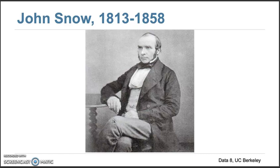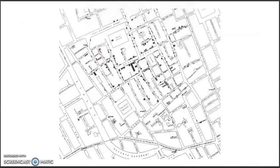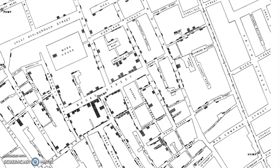In 1850, Doctor John Snow made a very good observation about the cholera disease. He obtained a map of the Soho area in London, and he systematically collected data. He then visualized the data on this map. For each household, the number of deaths is represented by a bar — each bar representing one death.